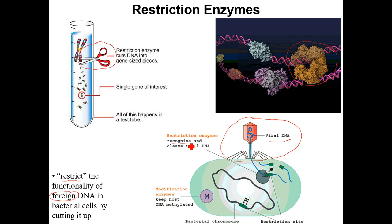These restriction enzymes recognize a very specific sequence of DNA within the viral DNA called a restriction site or recognition site. When they find it, they stop and make a cut, rendering the viral DNA non-functional. Inside the bacterial cell — which has a circular chromosome rather than a long linear one — bacteria protect their own DNA through methylation. If a restriction site happens to exist on the bacterial chromosome, they methylate that site so it's no longer cut by that particular restriction enzyme.